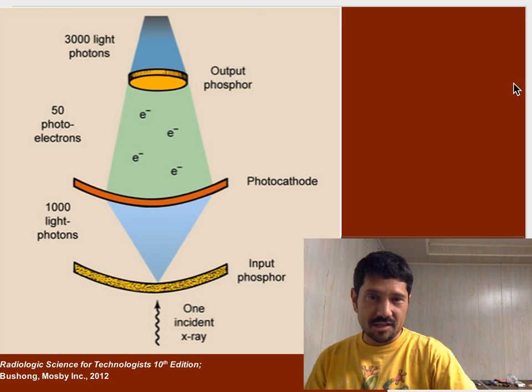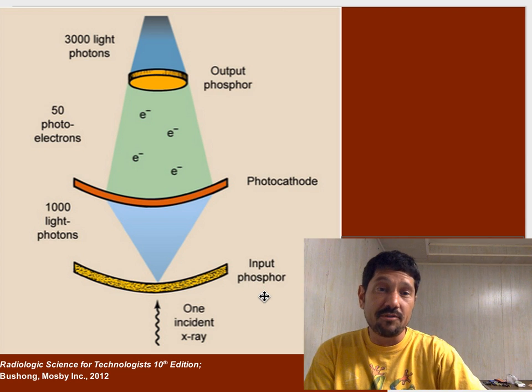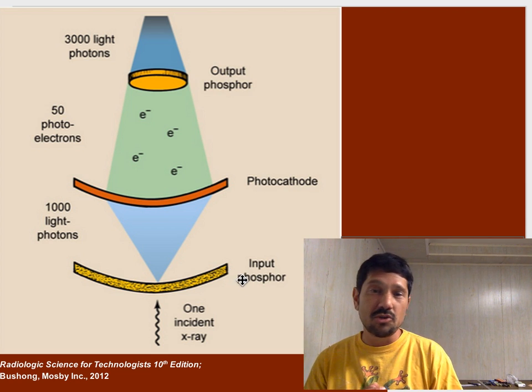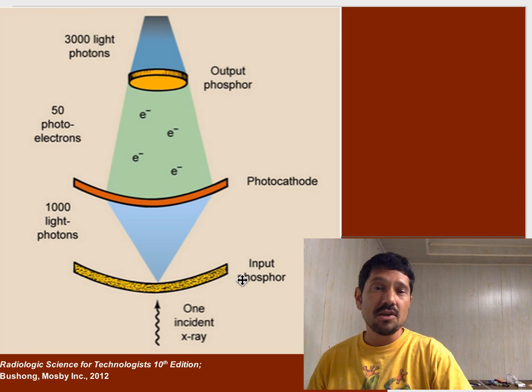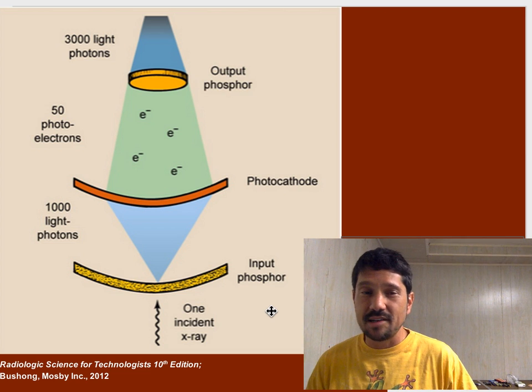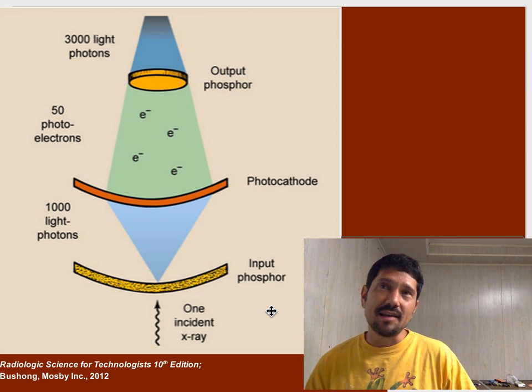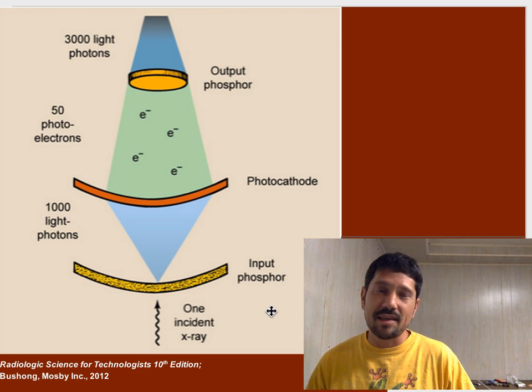Let's talk about our system. We have one X-ray coming in. It hits the input phosphor and it turns into a bunch of light photons. Because that input phosphor is our friend, cesium iodide. And it likes to absorb the X-ray and kick out light.